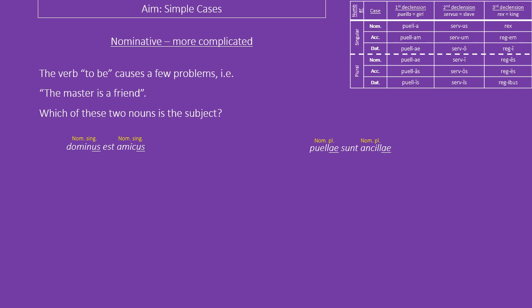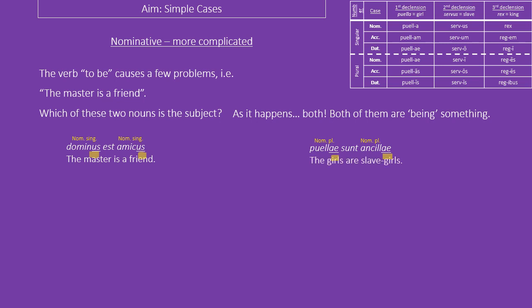With the nominative, there are a couple of things to discuss. The first is the verb 'to be.' If we think about the sentence 'the master is a friend,' which of these two nouns is the nominative? Well, actually it's both — they're both being something, they're both doing the verb, the verb being 'to be.' So both dominus and amicus are both nominative. The second sentence: the puellae are ancillae — the girls are slave girls.